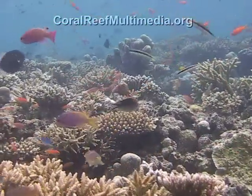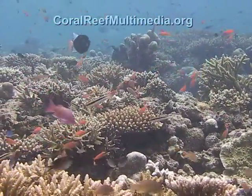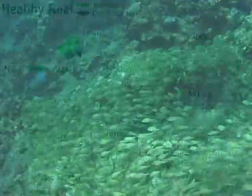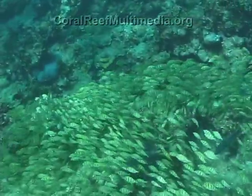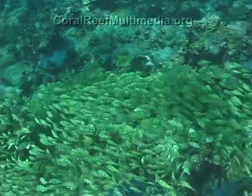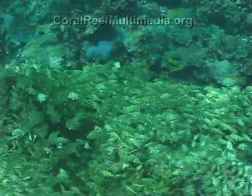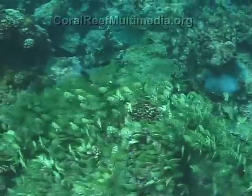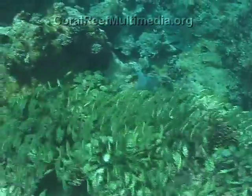Algae on the reefs are a main consumer of the nutrients present in the water above. As the algae utilize the nutrients, they increase in biomass, and this in turn is kept under control through the grazing activities of herbivores on the reef, such as sea urchins and fish. By covering a vast area of coral surface in a day, large schools of grazing fish reduce the ability of algae to proliferate. These large schools are critical in maintaining algal cover to a minimum.